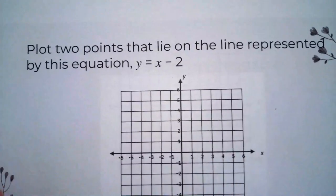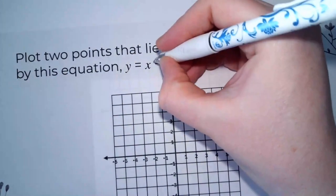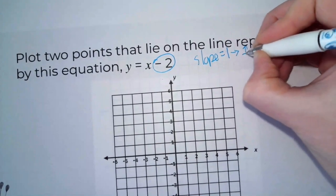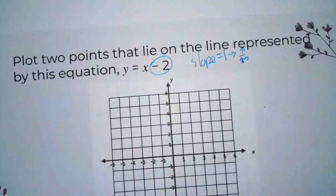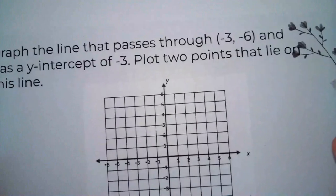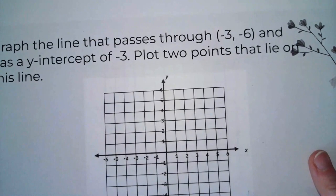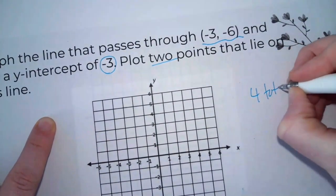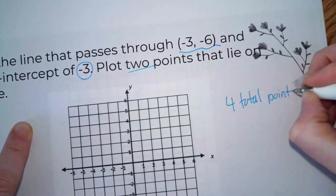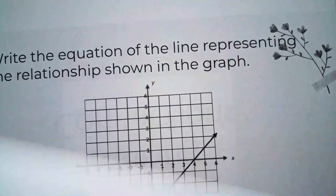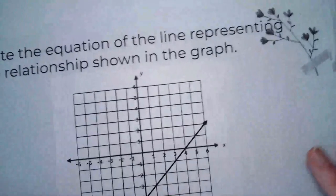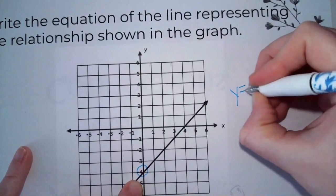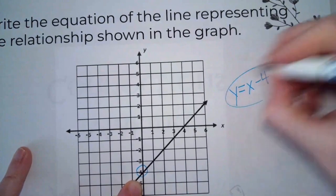For the next one, I'm not going to help you. Your y-intercept and your slope is 1, so that means you're going up 1 and to the right 1 from that point. You'll plot this point and this point, and then you need to plot two other points — four total points plotted. For the last graph, where does it cross the y-intercept? Negative 4. So y equals x minus 4.